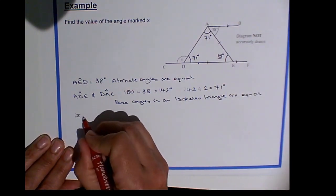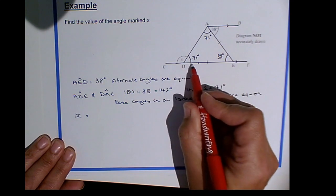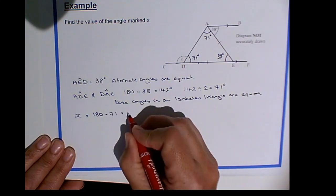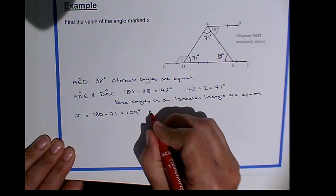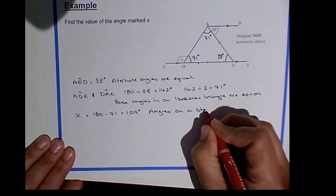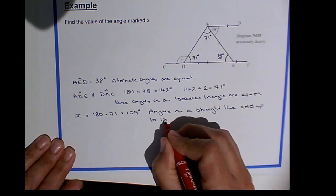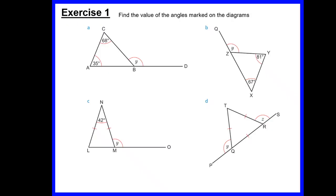Finally, to find our value of x, we have a straight line and angles on a straight line add to 180. So 180 minus 71 degrees leaves us with 109 degrees. The rule used: angles on a straight line add up to 180. Now that we've looked at that example, there are four questions for you to have a go at. Pause the video and see if you can find the angles marked with letters, then check your work against the solutions.